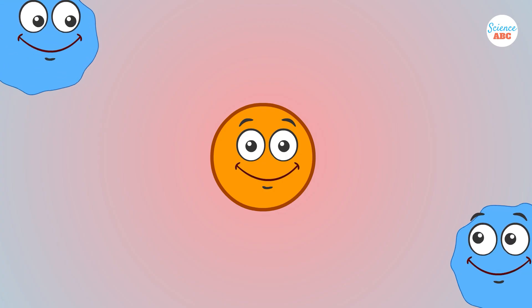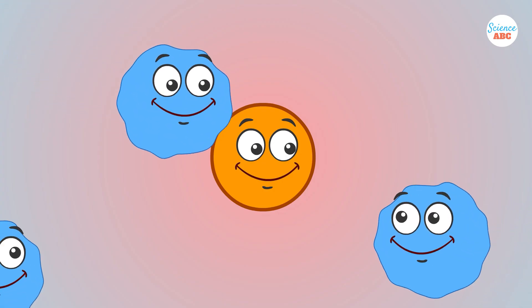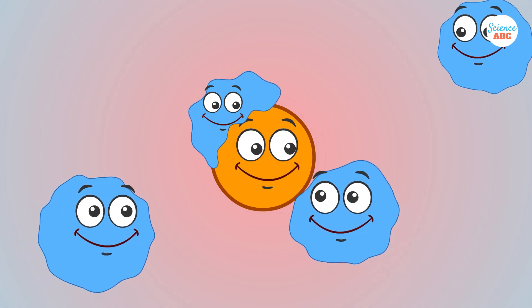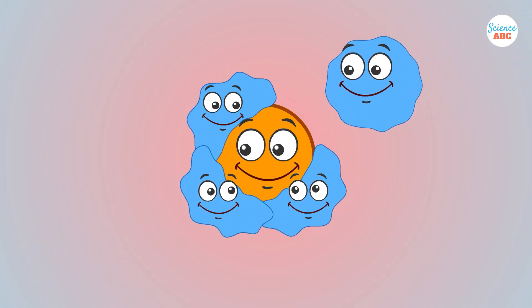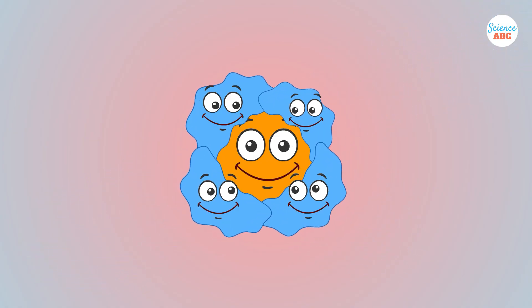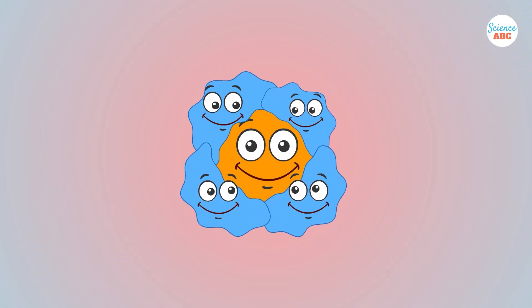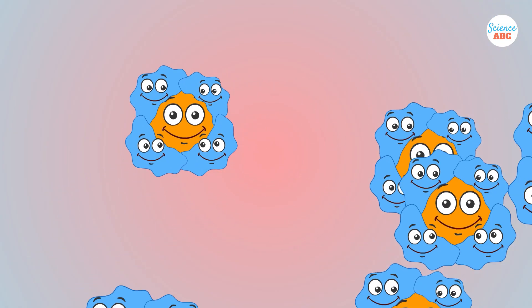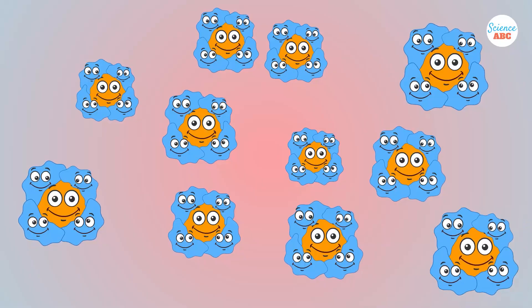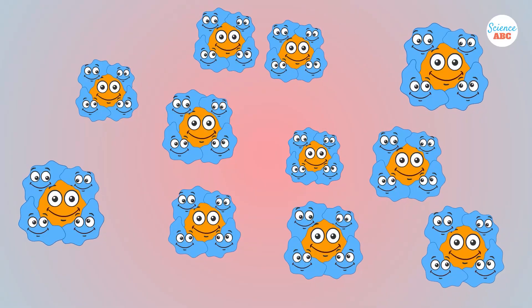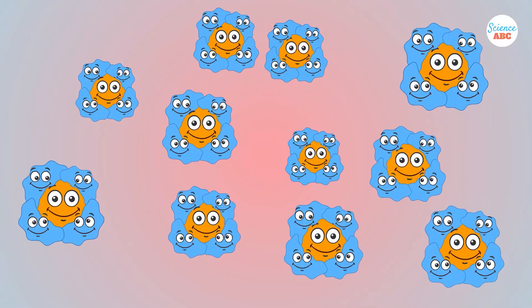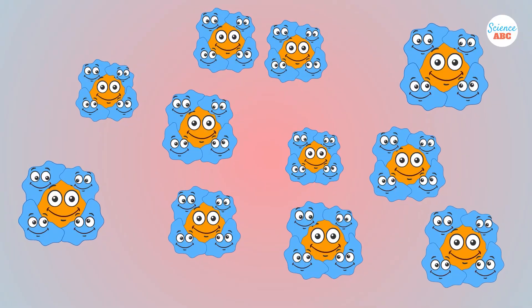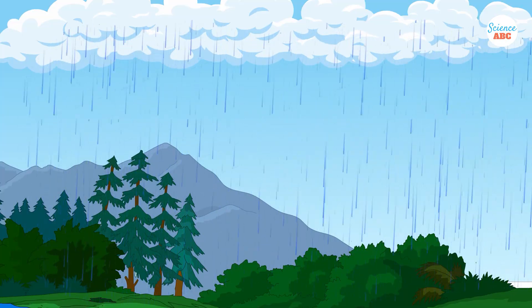These particles act as nuclei, providing something for the water droplets to hold on to, allowing more droplets to gather around them. This creates a snowball effect, causing the droplets to grow larger and larger. When they become heavy enough, they fall as rain or snow.